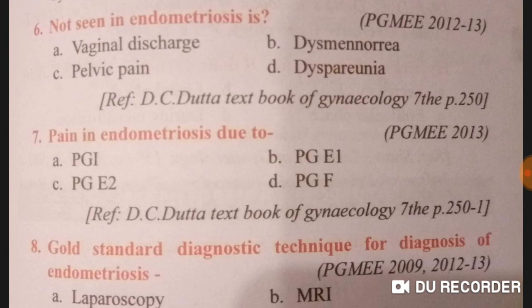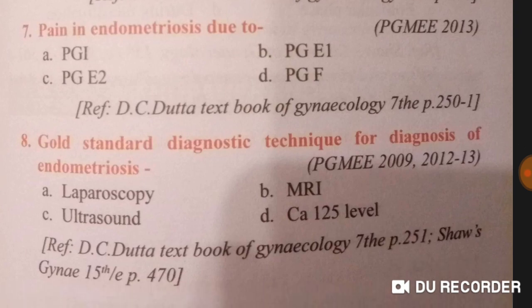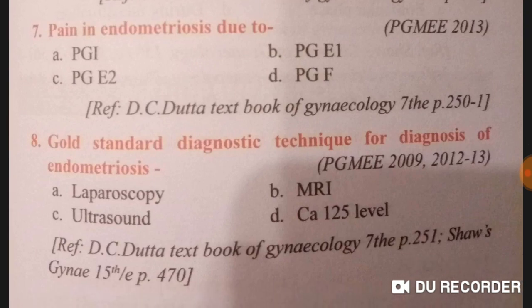What is not seen in endometriosis? Vaginal discharge is not seen in endometriosis, but we do see dysmenorrhea, pelvic pain, and dyspareunia. Dysmenorrhea is pain during the menstrual period; dyspareunia is pain during intercourse.